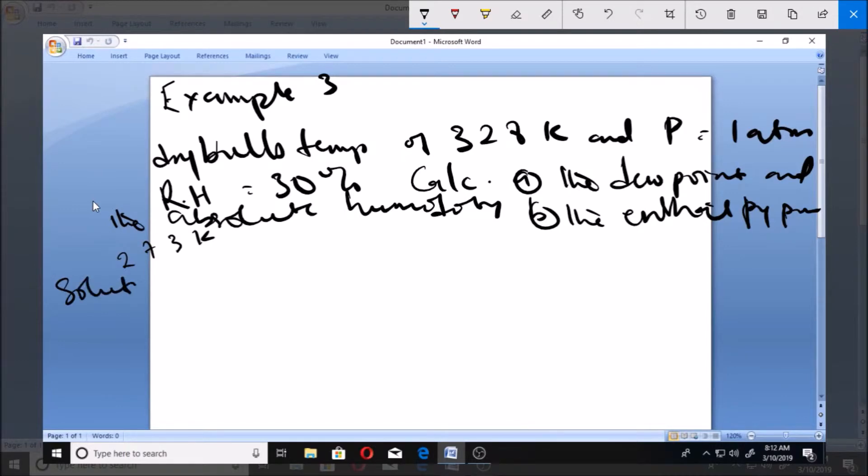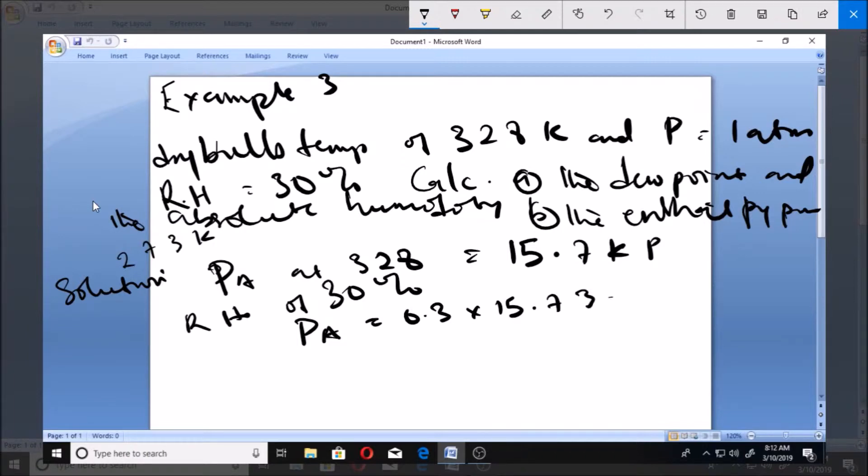Solution: The vapor pressure of water at 328K is 15.7 kilopascals. For a relative humidity of 30%, Pa becomes equal to 0.3 times 15.73, which gives us 4.72 kilopascals. So that's what we'll be using.